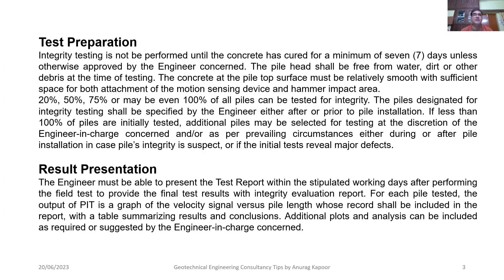As regards the number of piles to be tested, we can test twenty, fifty, seventy-five, or even one hundred percent of the piles constructed at the site for integrity purposes. The piles designated for integrity testing shall be specified by the engineer in charge, either before or after pile installation. If less than one hundred percent of piles are initially tested, additional piles may be selected at the discretion of the engineer in charge, depending on prevailing circumstances, site conditions, or if initial tests reveal any major differences.